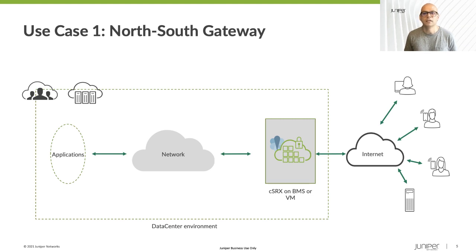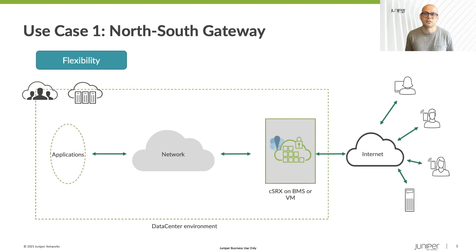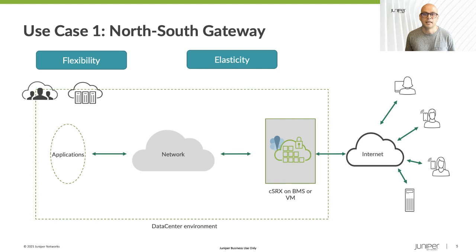The container firewall needs only two vCPUs in a non-reserved mode and four gigabytes of memory. The CPUs are not reserved, meaning other applications can run on the same VM or host as well. Horizontal scale can be achieved using automation to spin up new instances using Docker Compose, for example. Any load balancer deployed in the front-end can effectively distribute the flows across the different CSRX instances as they come online based on the needs of the business.